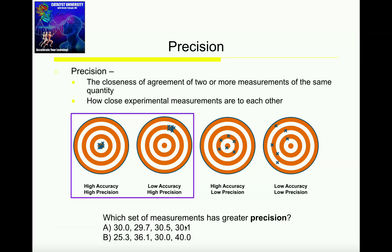Those seem to cluster pretty close to 30. And then B is 25.3, 36.1, 30.0, and 40.0. I don't really need to do any math here — I can just eyeball this. It looks to me like A actually has the greater precision, because all of these values sort of cluster closer to one another than they do in the second choice. However, it's not good enough to just eyeball things. We want to have a way to quantify this. That's what we're going to do in this video.